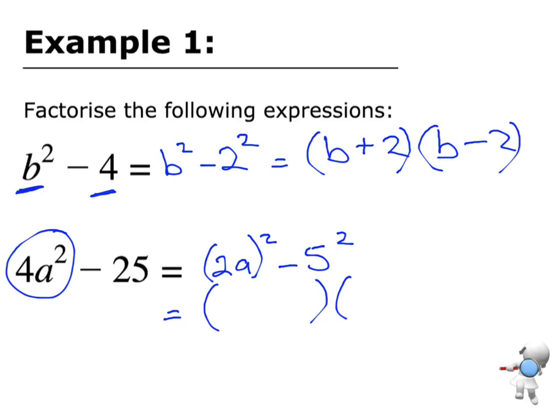So now I want to have my two sets of brackets, I need a 2a times a 2a to get the 2a squared, I need a 5 times a 5 to get the 25, and I need 1 plus and 1 minus, so it is the difference of 2 squares, because the middle term has dropped out.